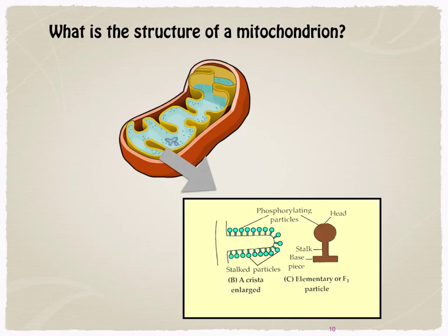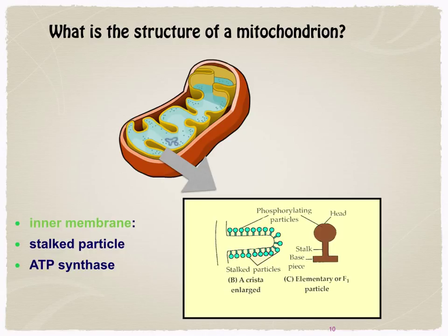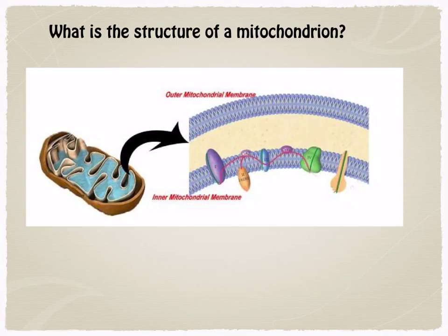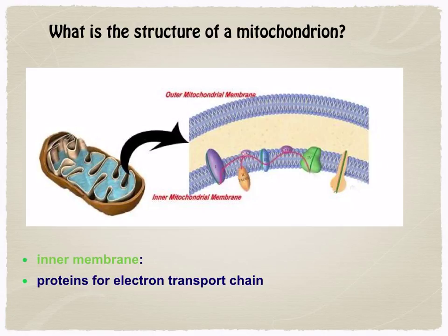On the cristae you can see small structures called stalked particles on the inner membrane. These stalked particles have a special enzyme called ATP synthase joined to them, so the stalked particles and ATP synthase are found on the inner membrane — very important to remember. The inner membrane is also the site of the electron transfer chain, with proteins held in close proximity to one another for efficient transfer of electrons.